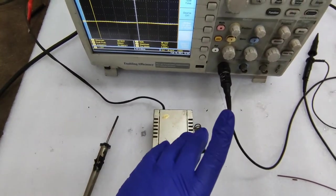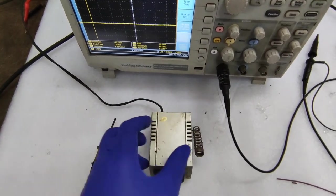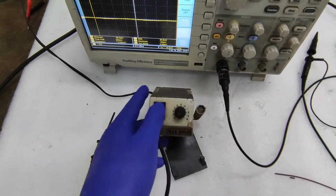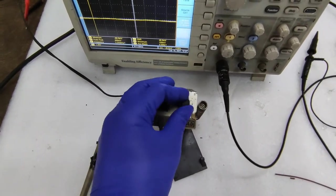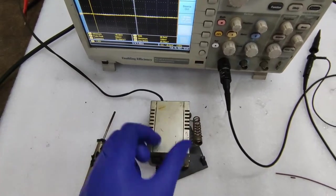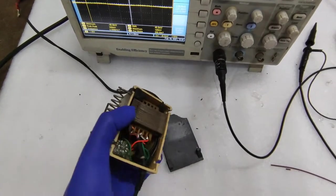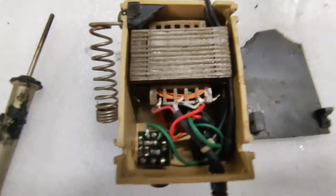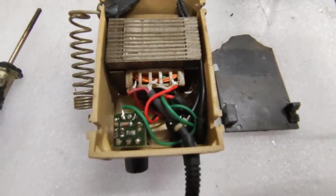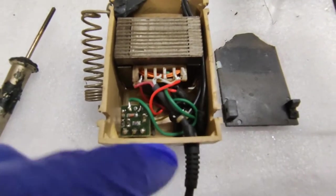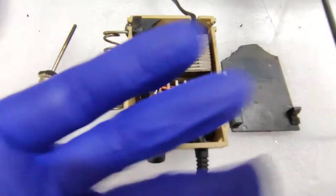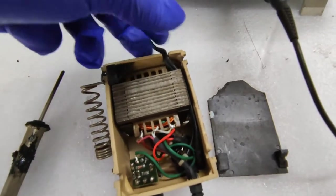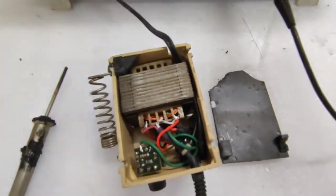So the theory of operation of these kind of cheap temperature control soldering stations are really simple. All it does is it is connecting a fan speed controller or in more technical terms a chopper, AC chopper circuit in series with the primary of a step down transformer. In this case it's a 12 volt transformer, the secondary voltage will be 12 volts and as we can see there is a small circuit board which consists of the AC chopping circuit or basically the fan speed controller and it is connected to the primary side of the transformer.